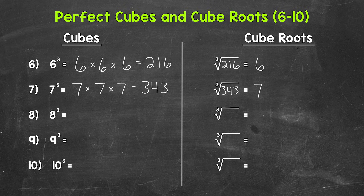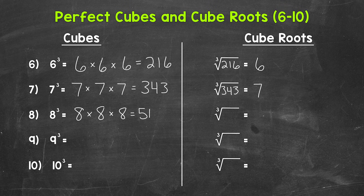Let's move on to number eight where we have eight cubed. That means eight times eight times eight. Eight times eight is sixty-four, and sixty-four times eight equals five hundred twelve. Eight cubed equals five hundred twelve, which means the cube root of five hundred twelve equals eight.